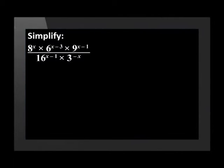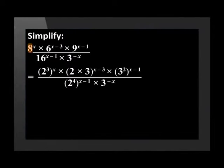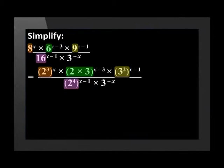Simplify the following expression: 8 to the power of X times by 6 to the power of X minus 3 times by 9 to the power of X minus 1 over 16 to the power of X minus 1 times by 3 to the power of negative X. Let's start by writing all of the bases as products of their prime factors. 8 becomes 2 cubed, 6 becomes 2 times 3, 9 becomes 3 squared and 16 becomes 2 to the power of 4.